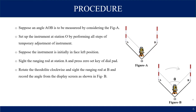You have to focus on the O station where the instrument will be centered and leveled properly. The temporary adjustment is completed. Then the ranging rod will be placed at A station, then the ranging rod will be placed at B station.